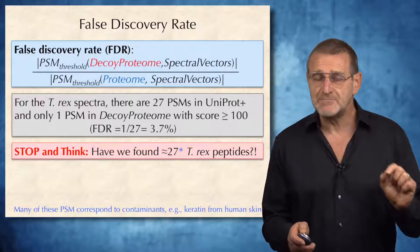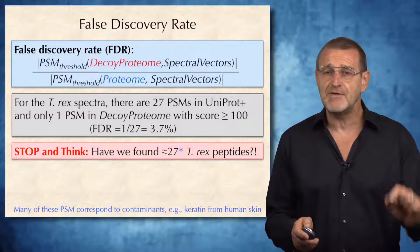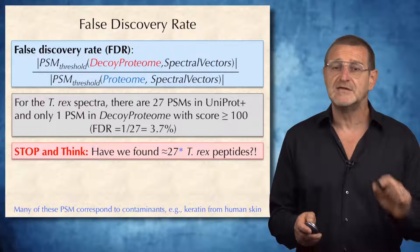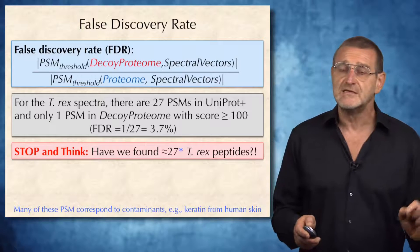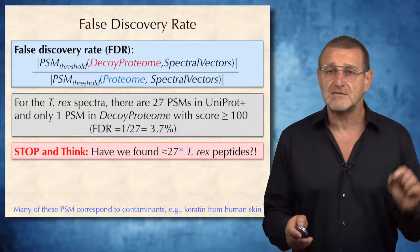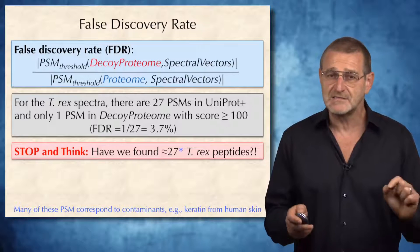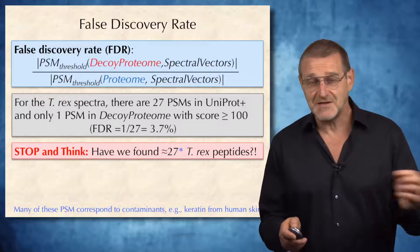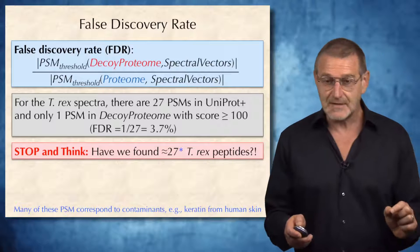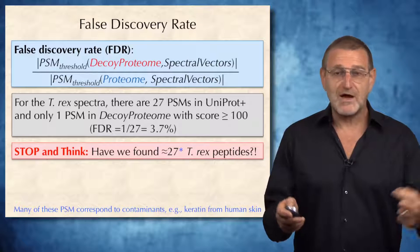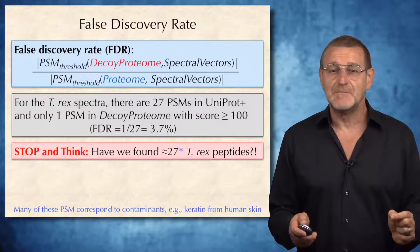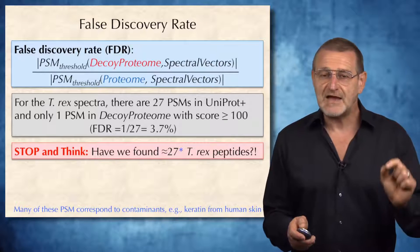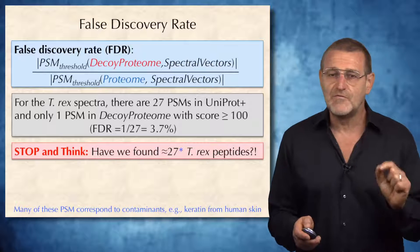because many of the peptides that we identify are simply laboratory contaminants that are present in every experiment. For example, keratin from human skin. There are currently millions of tiny particles of my skin and skin of the people who pass through this room floating in the air in this room.